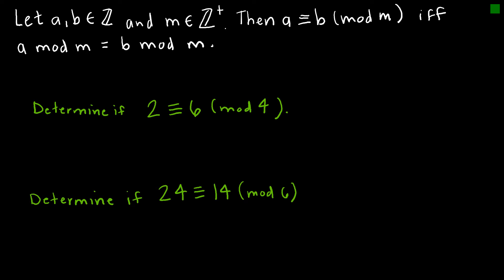We've looked at the definition of modular arithmetic, and now I want to look at a theorem that follows from it. The theorem states: if a and b are integers and m is a positive integer, then a is congruent to b mod m if and only if a mod m equals b mod m. So really, if the remainders are equal to one another, then they are congruent.